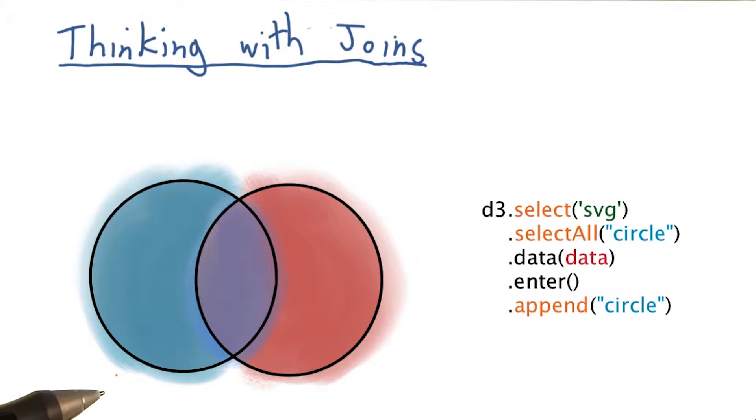We can think of these circles and their overlap representing the state of things right after our data bind, when we're considering what type of special selection to make.